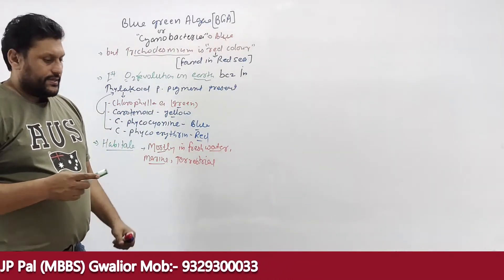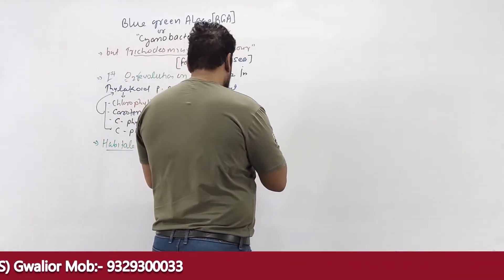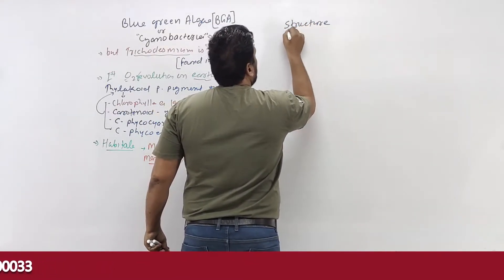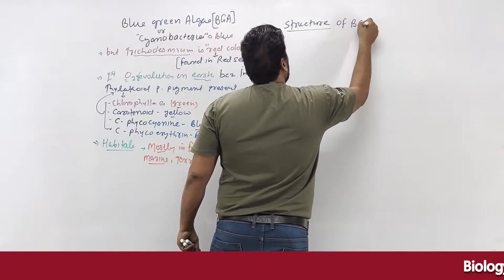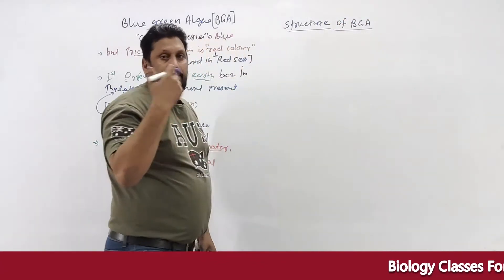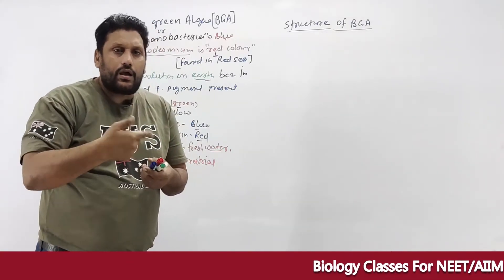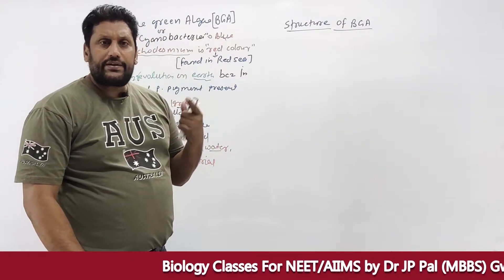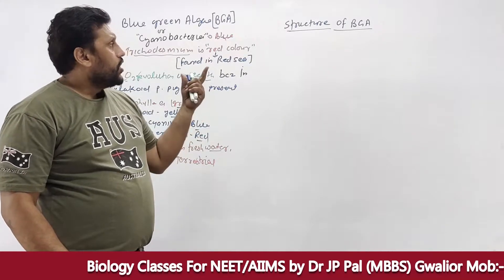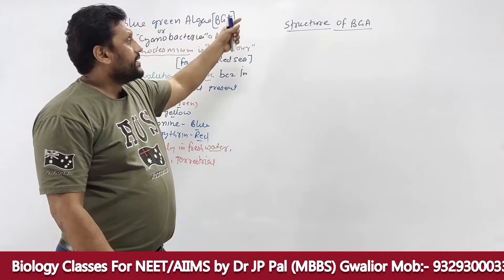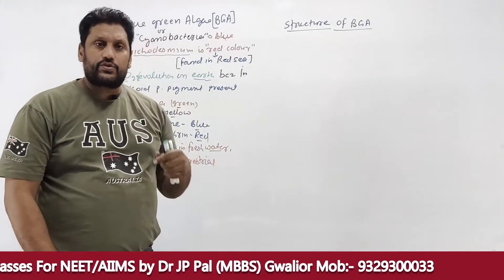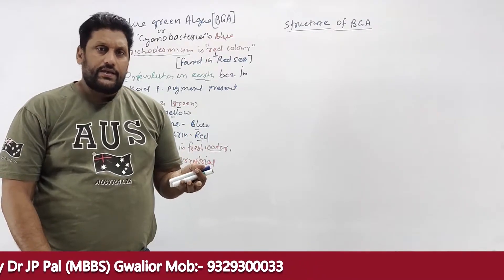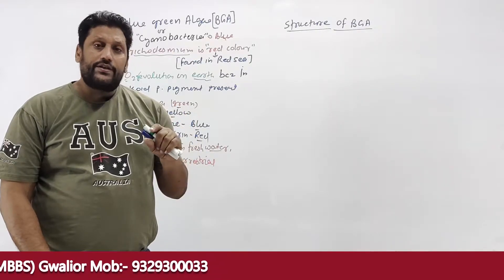Now let's discuss the structure of BGA. Like bacteria, BGA can be gram-positive or gram-negative. The general bacterial structure includes: glycocalyx, cell wall, plasma membrane, cytoplasm, nucleoid, and inclusion bodies. BGA has a two-layered cell wall with a plasma membrane and cytoplasm inside.